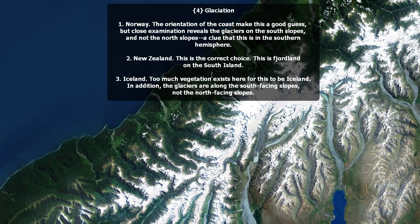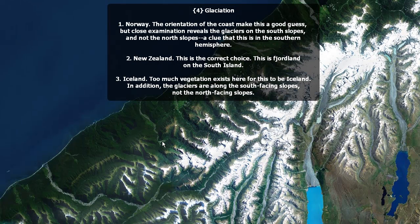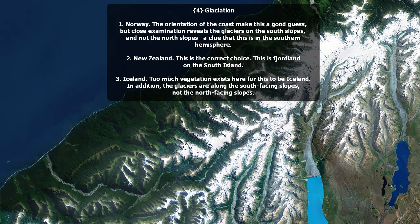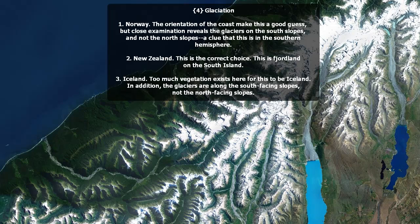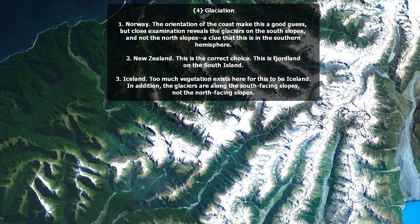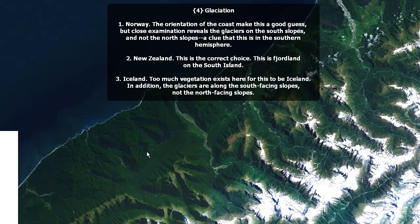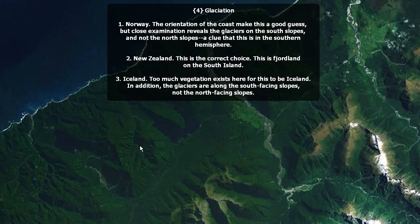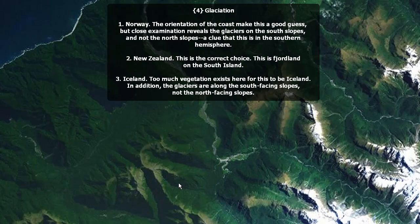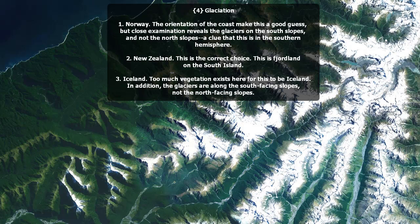The pattern of the Thames in London does not exhibit the long loop that is evident here. Hamburg contains a wide estuary with access to the North Sea, which is not evident here. Hamburg's street pattern is different from that of Paris. This one is in New Zealand — the Fjordland on the South Island. Norway? The orientation of the coast makes this a good guess, but close examination reveals that the glaciers are on the south slopes here, rather than on the north-facing slopes.